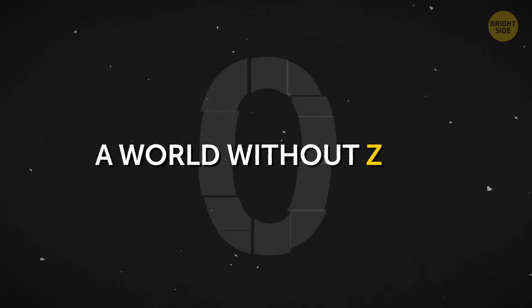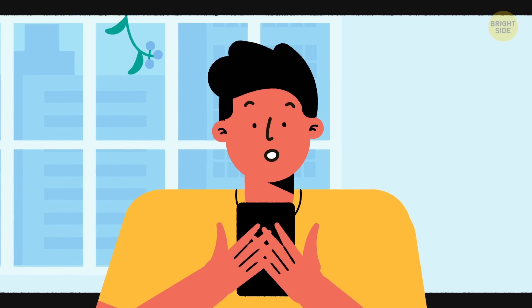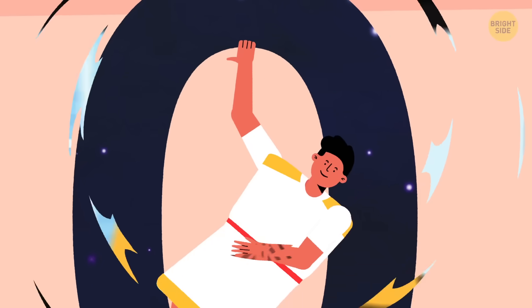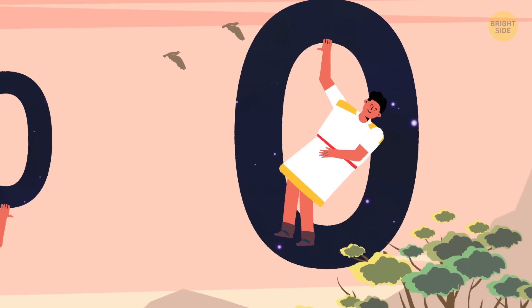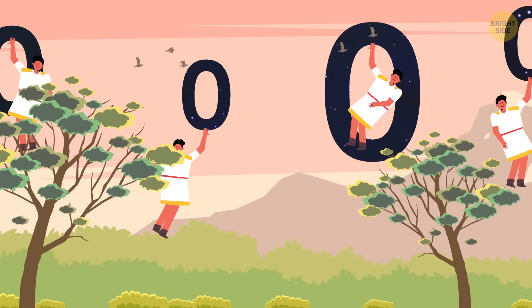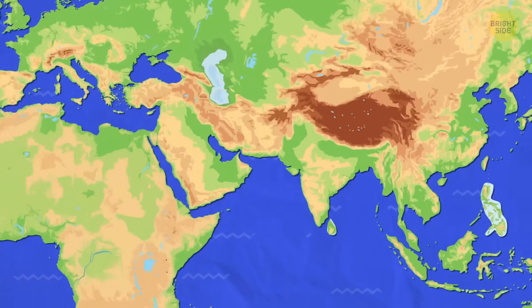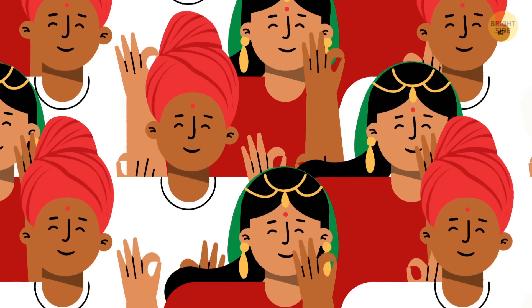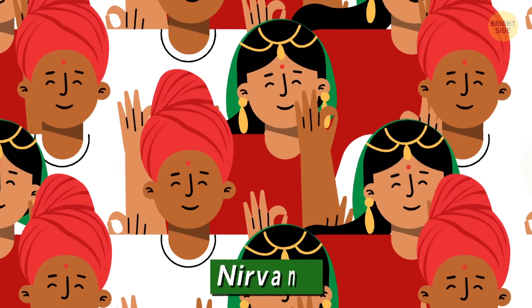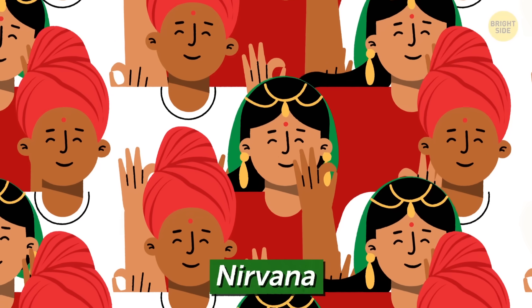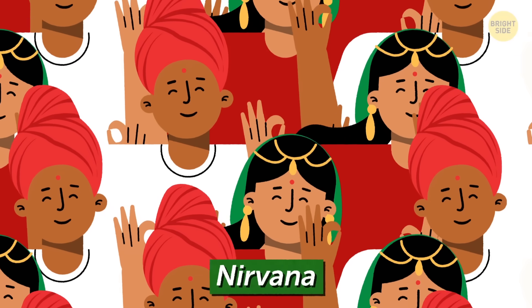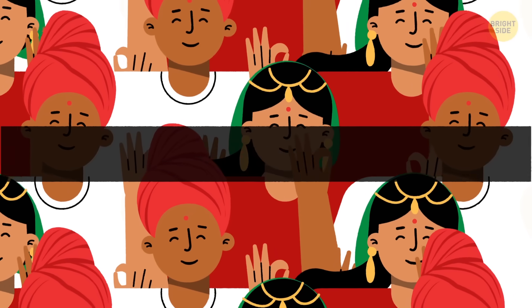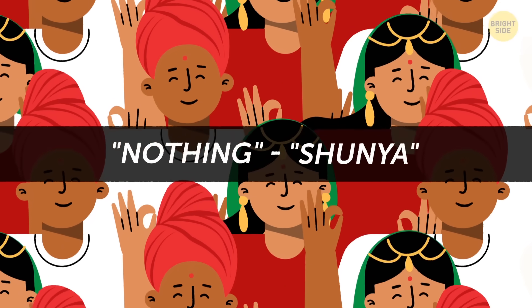A world without zero. You might be surprised to learn that zero hasn't been around forever. Yes, we used to live in a world without it — well, an understanding of the concept of zero, at least. It was invented in India during the 5th century, and it's closely connected with the ancient culture of this region. Nirvana is what they call absolute calmness, the absence of anxieties and desires. So they came up with a circular symbol denoting this nothing. They called it shunya.